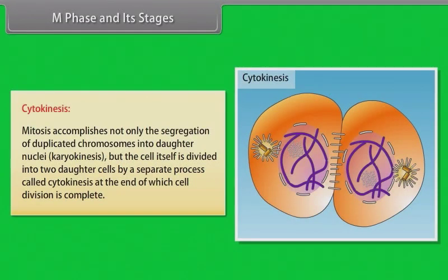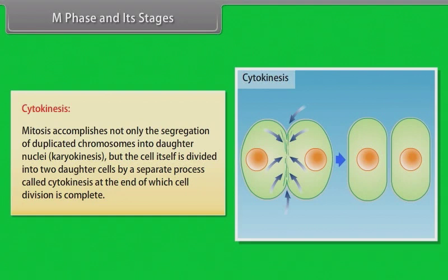Mitosis accomplishes not only the segregation of duplicated chromosomes into daughter nuclei, karyokinesis, but the cell itself is divided into two daughter cells by a separate process called cytokinesis, at the end of which cell division is complete.